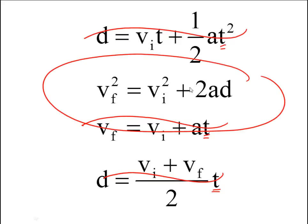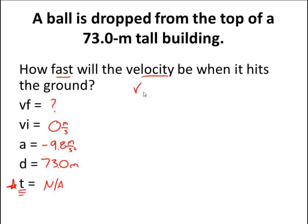This problem is going to be solved by that formula right there, vf squared equals vi squared plus 2ad. So let's go back guys and plug the numbers into that formula. We chose on the other page, vf squared equals vi squared plus 2 times the acceleration times the displacement.